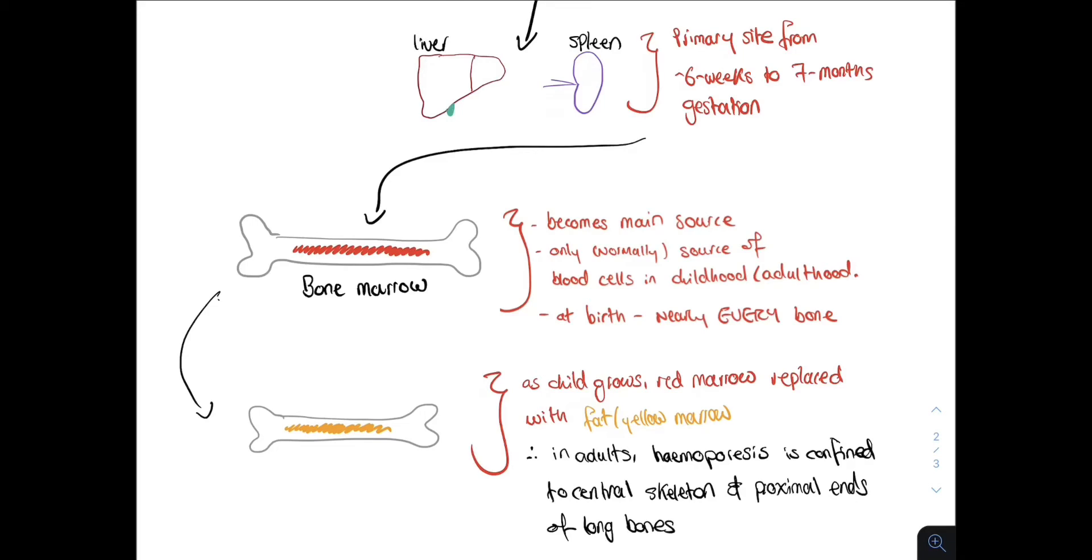Later, we shall discuss extra-medullary hematopoiesis. Now this is a pathological process which results in the resumption of hematopoietic activity in the liver and spleen.